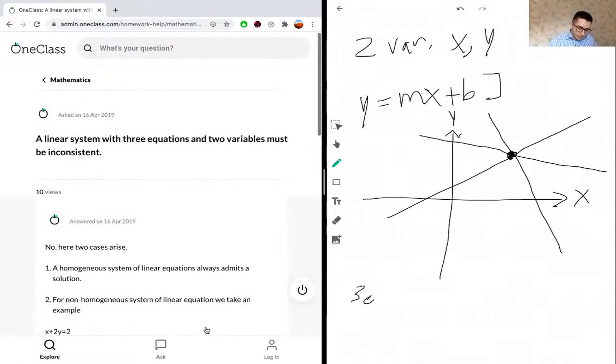Three equations and two variables give us one unique solution based on this diagram. This is just one example of how this statement is incorrect, so we can say right away that this statement is false. This is just one scenario where this statement is not true.